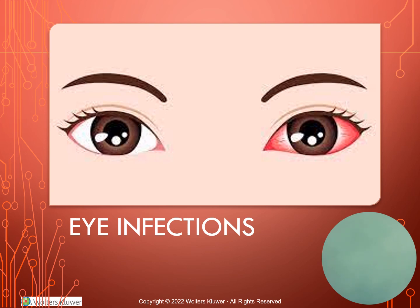Conjunctivitis is a significant and very contagious eye infection. It is an acute inflammation of the conjunctiva. It can be caused by a virus, bacteria, allergies, or a foreign body, but most often by bacteria. Cultures can be done if there's any exudate coming from the eye to help identify the organism, and we treat it with ophthalmic antibacterial agents. We have to teach appropriate precautions to prevent this from being spread.